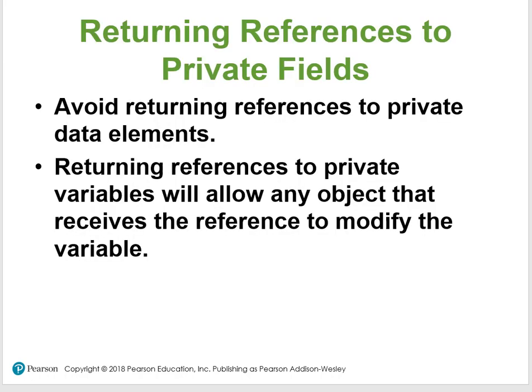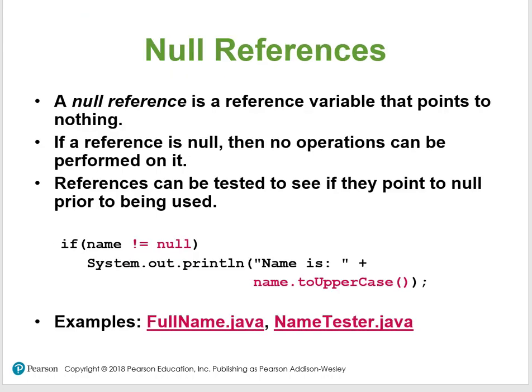You should avoid returning a reference to a private field. Returning a reference to a private variable will allow an object that receives the reference to modify that variable. A null reference is a reference that points to nothing. If a reference is null, no operations can be performed on it, but it can be tested for null.